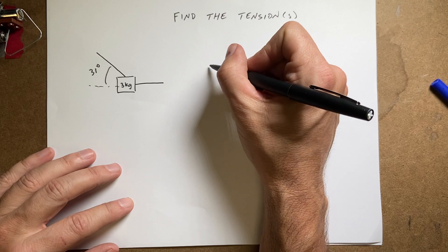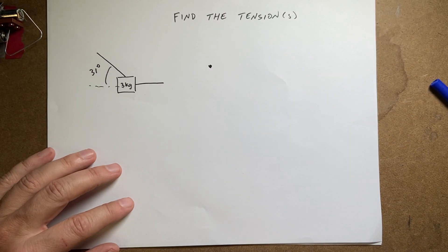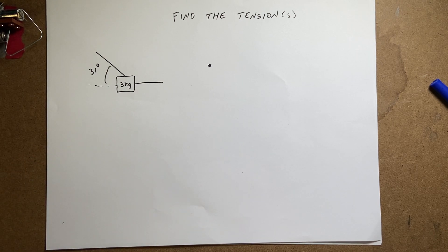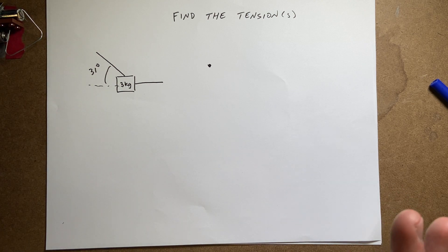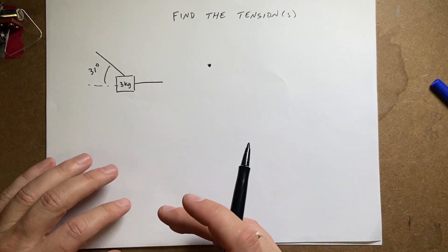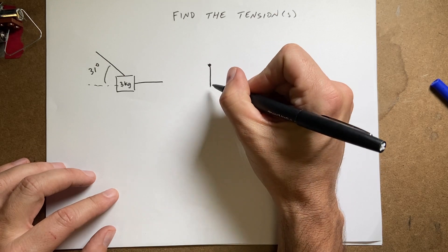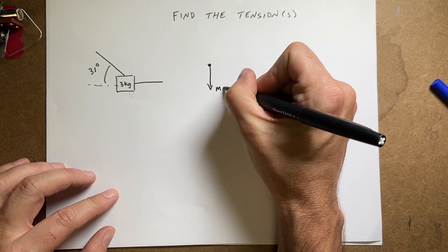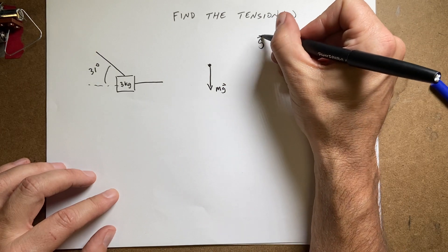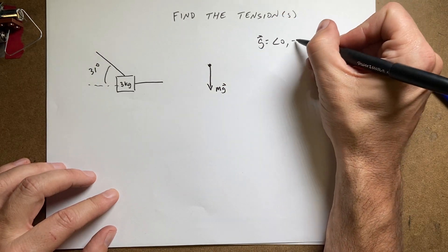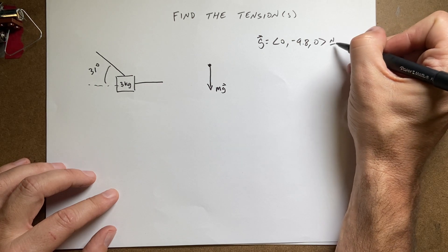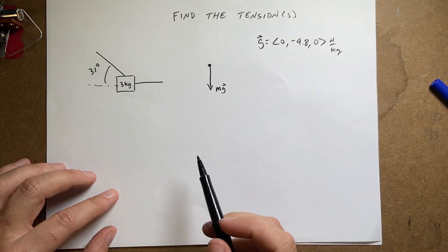I'm going to start off with a free body diagram. I'm going to start with a dot and then draw all the forces acting on the block. It's easy to think about this in terms of two types of forces: long range forces and contact forces. The long range force that doesn't have to touch this block is the interaction between the block and the earth — we call that the gravitational force. It'd be downward with the gravitational force mg, where g is the vector (0, −9.8, 0) newtons per kilogram, and m is the mass.